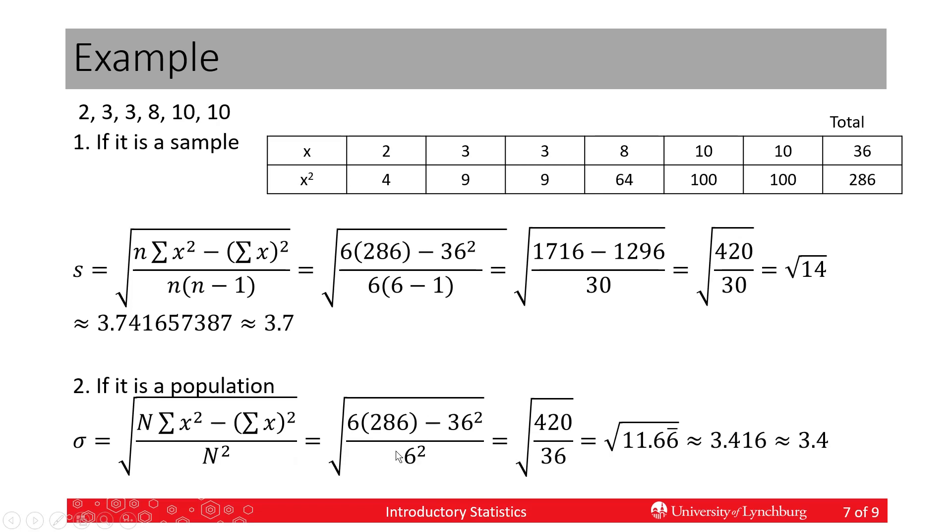We get 420 over 36. This is the square root of 11 and 2 thirds. Notice that this bar means the 6s keep going forever.